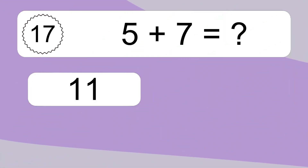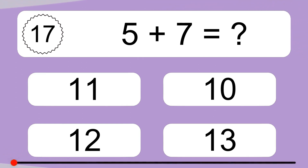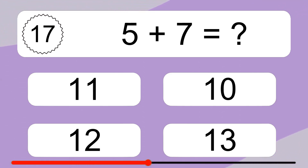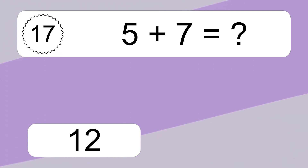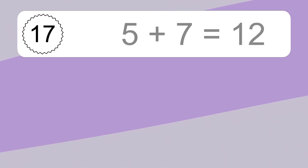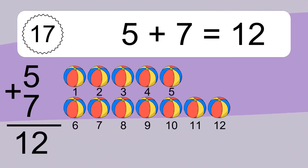5 plus 7 equals what? 5 plus 7 equals 12.